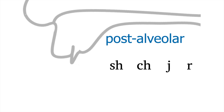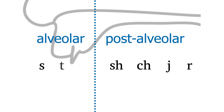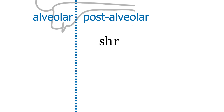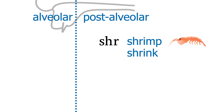They also share the tendency for rounded lips — compare the alveolar S, T and D. Note that English has plenty of words where SH and R form a cluster, like at the start of 'shrimp,' 'shrink,' 'shred,' 'shrub,' etc.